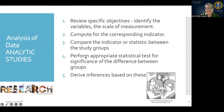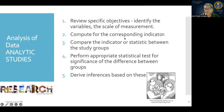In analyzing data for analytical studies, you first review your specific objectives, especially your hypotheses. Then identify the variables used and the scale of measurement. Then compute for the corresponding indicator — whether it's odds ratio, relative risk, ARR, number needed to treat, or number needed to harm. Then compare the indicator or statistics between study groups, perform a proper statistical test of significance, and derive inferences based on these results.